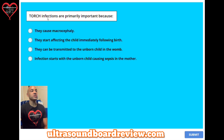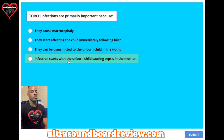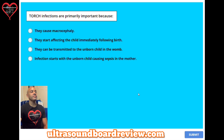Question 48. TORCH infections are primarily important because: A: they cause macrocephaly. B: they start affecting the child immediately following birth. C: they can be transmitted to the unborn child in the womb. Or D: infections start with the unborn child causing sepsis in the mother. The answer is C: they can be transmitted to the unborn child in the womb.